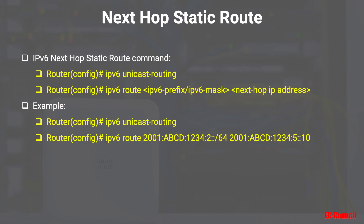There is also an IPv6 next hop static route command. We must first enable IPv6 unicast routing, then use `ipv6 route` followed by the IPv6 network prefix slash subnet mask and the next hop IPv6 address. For example, the command includes the destination network with its subnet mask followed by the IPv6 next hop IP address.